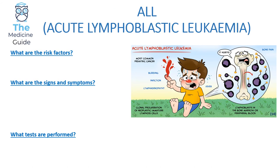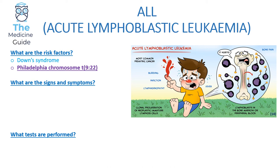Acute lymphoblastic leukemia — ALL is the most common paediatric leukemia. Risk factors include Down syndrome and, even more importantly, the Philadelphia chromosome t(9;22). That's something you definitely need to know because it crops up quite often in exams — awareness of the Philadelphia chromosome association with ALL will help you gain the higher marks.